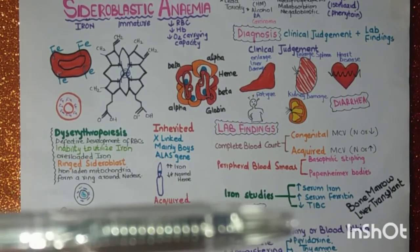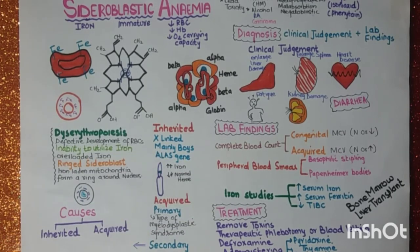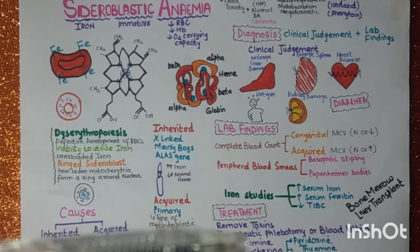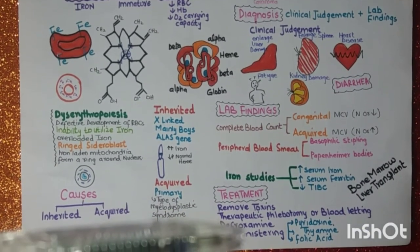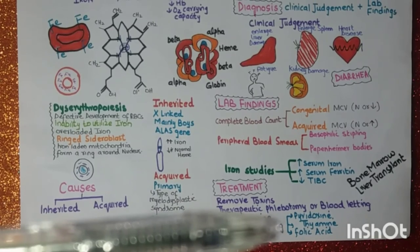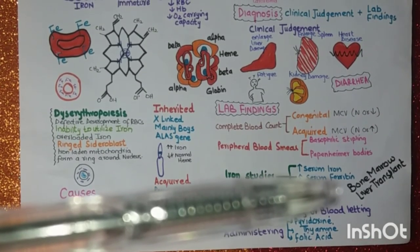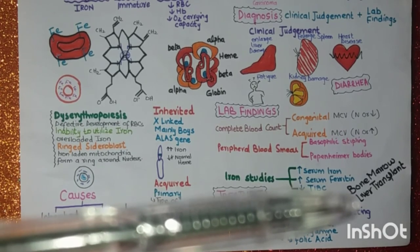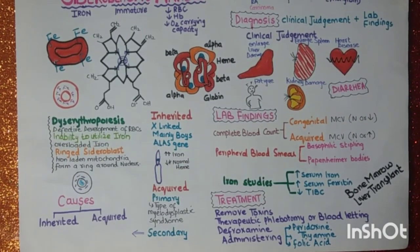In bone marrow studies, you will see erythroid hyperplasia. For treatment: remove the toxin, do phlebotomy or bloodletting, administer deferoxamine, and give pyridoxine, thiamine, or folic acid. When the condition is severe, bone marrow transplant or liver transplant may be required.